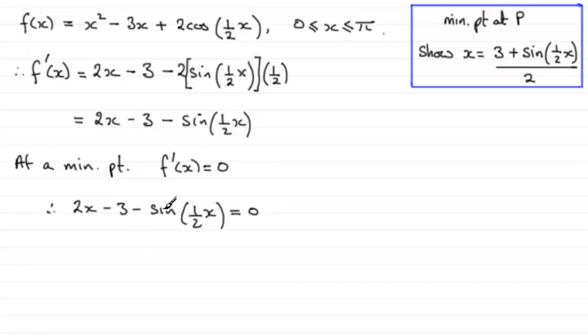And if we were to add 3 and add sine of half x to both sides we end up with 2x equaling 3 plus the sine of half x. And clearly now if we divide both sides by 2 we end up with what we had to prove: that x equals (3 plus the sine of half x) all divided by 2.